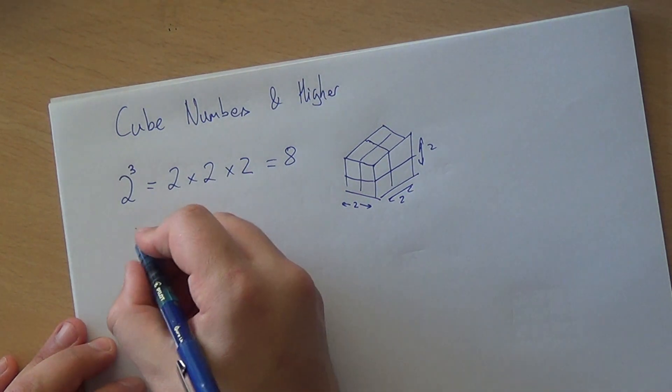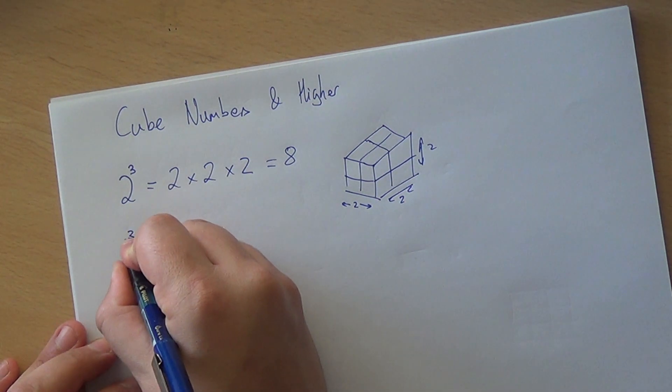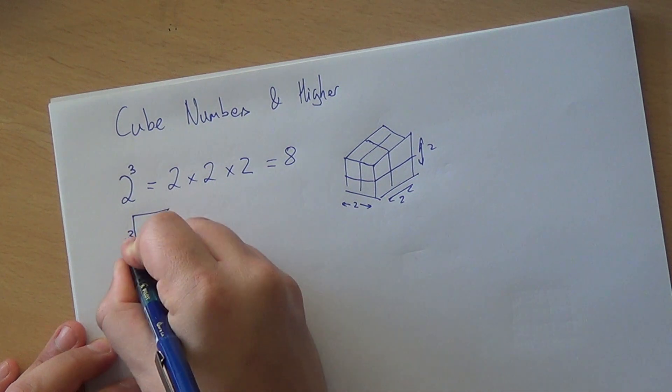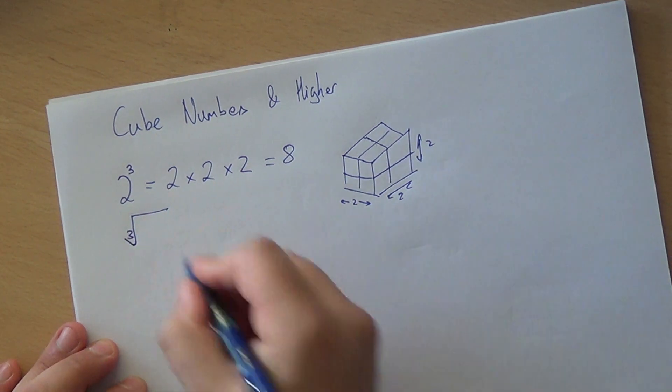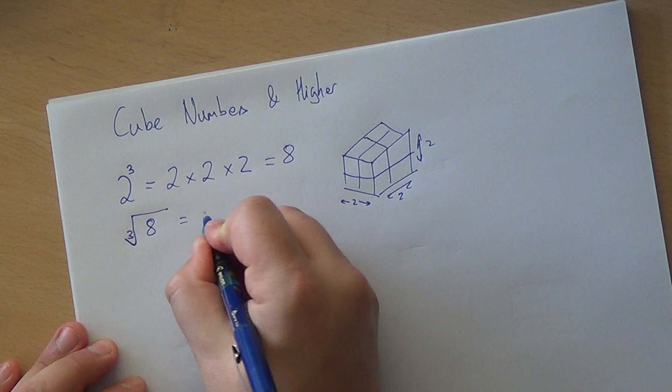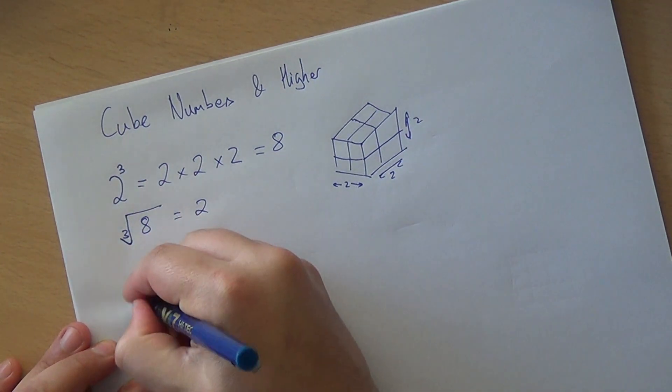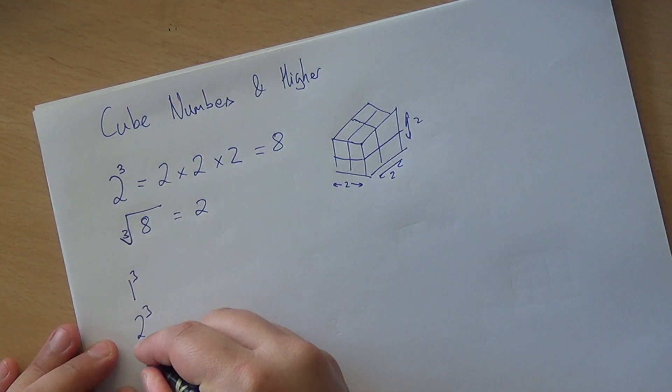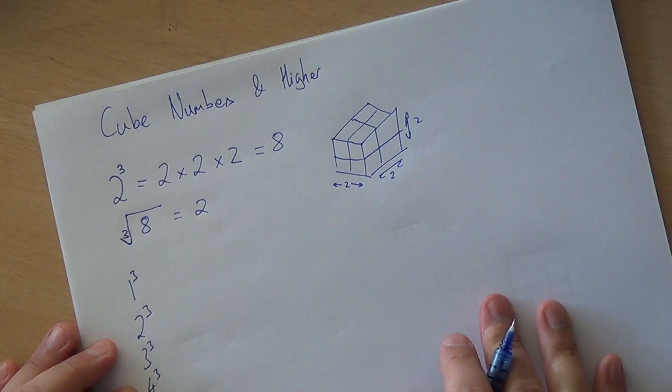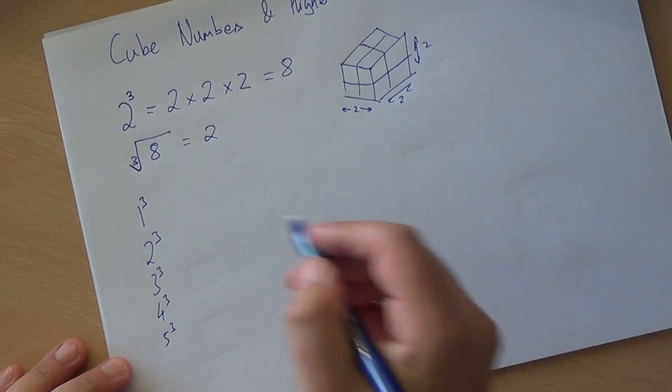Just like there were square roots, there are also cube roots. So the cube root is the same symbol but you write a little 3 there. The cube root of 8 is 2, because it's the same as this fact. In the UK, there's an expected list to be known, and it's just the 5 of them that are required to be known.